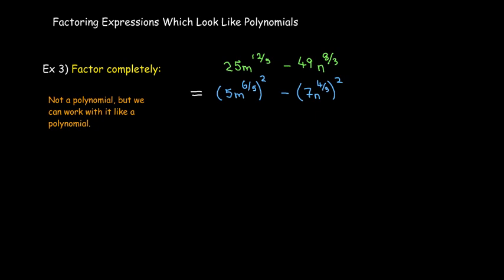So I can factor the first term as 5m raised to the power of 6 fifths all squared. And then the second term is 7n to the 4 thirds power all squared. So now I have the difference of two squares, and I can factor this as the product of conjugates.